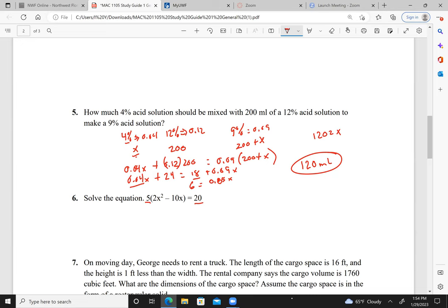Solve the equation. First thing I do is get rid of this by dividing both sides by 5. So I have 2x squared minus 10x equals 4. I can divide it by 2 and get x squared minus 5x equals 2. So I have x squared minus 5x minus 2 equals 0.